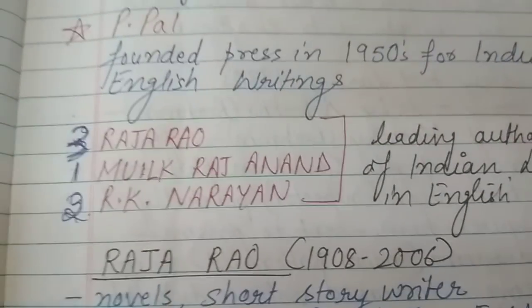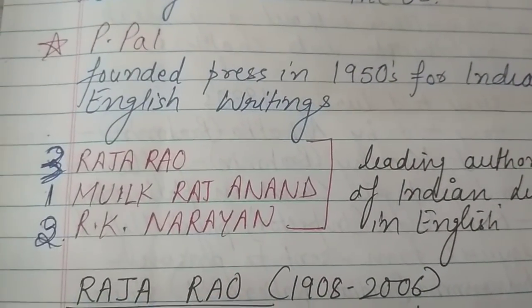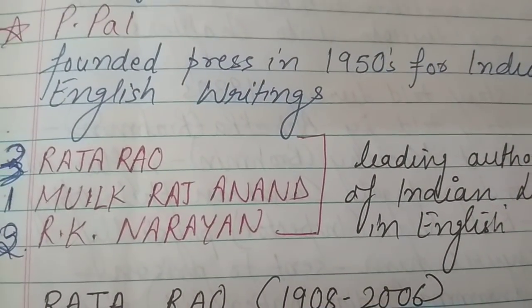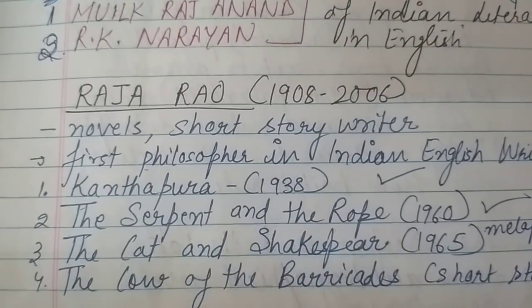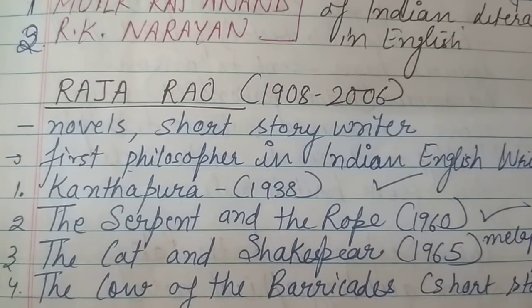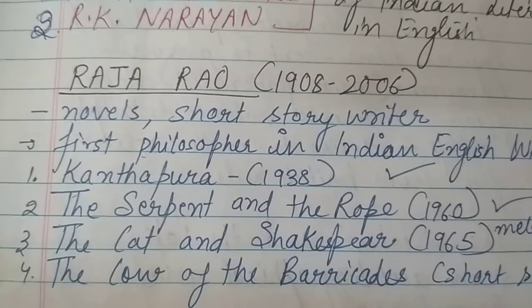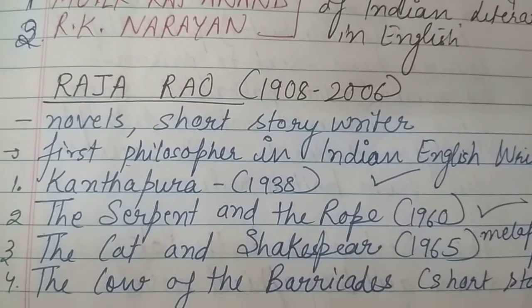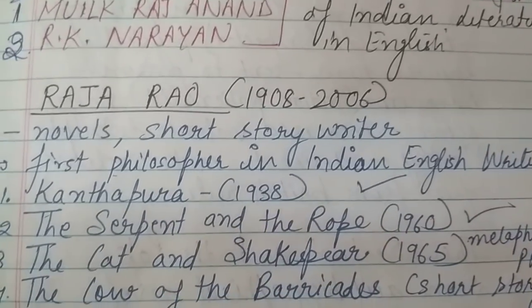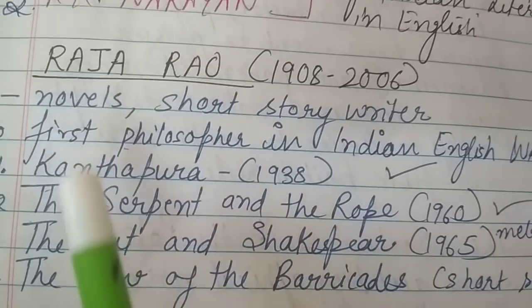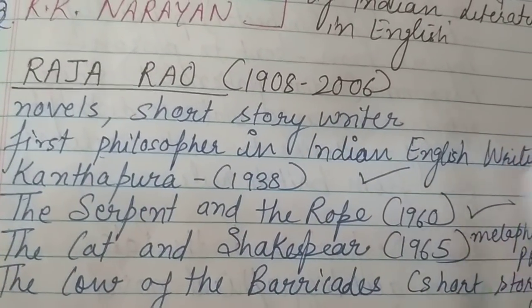Now let's come to the three main leading pillars of Indian English Literature: Mulk Raj Anand, R.K. Narayan, and Raja Rao. Raja Rao's time span was from 1908 to 2006. He was a novelist and short story writer, and he was the first philosopher in Indian English writing, known for his philosophical works.